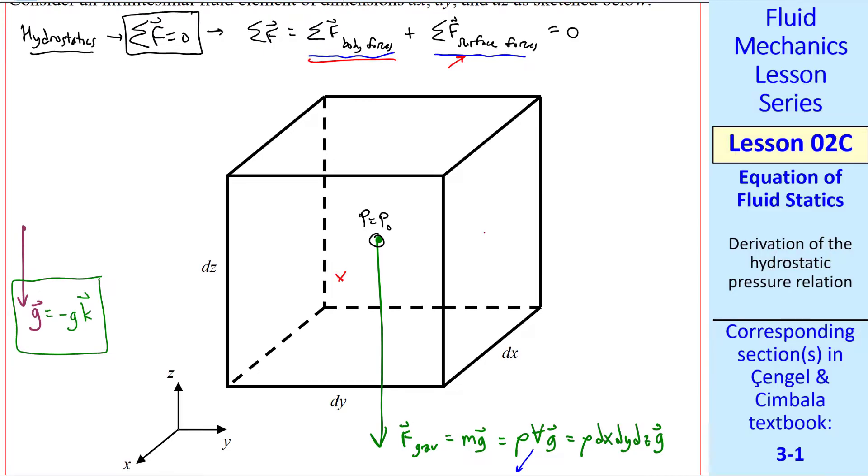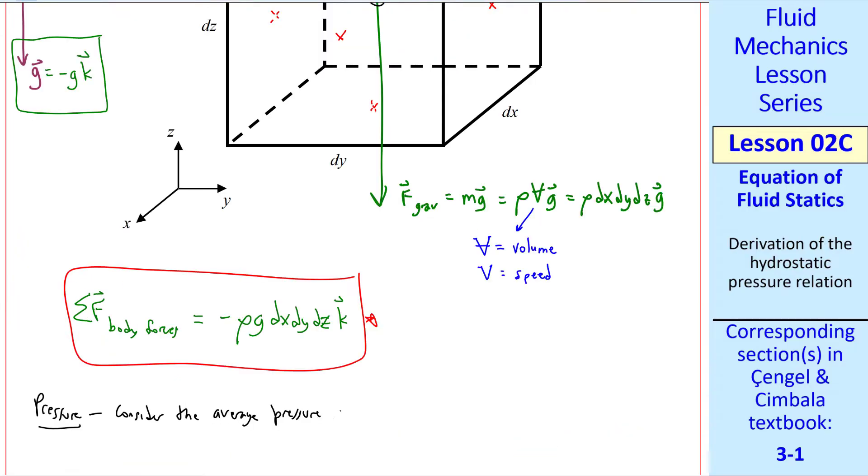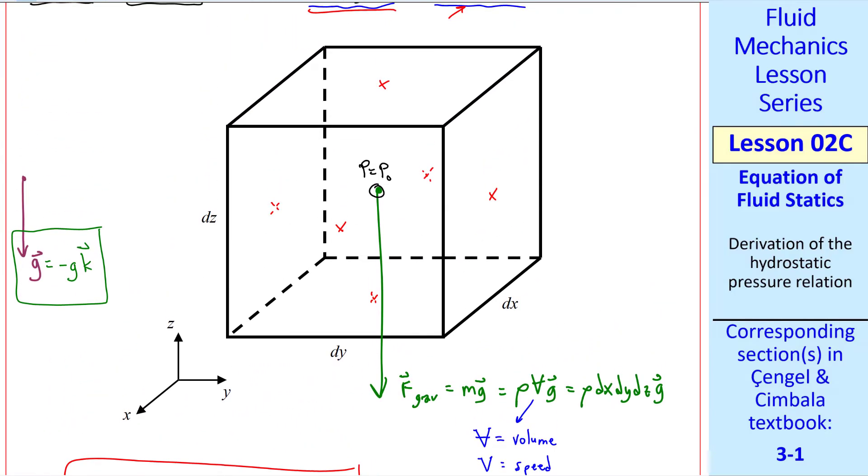This is hard to draw in 3D, but let's look at the center of each of these faces. Here's the center of the front face, the right face, and the top face. I'll use dashed lines for the left face since it's hidden, the back face, and the bottom face. For the pressure forces, let's consider the average pressure on each of the six faces. Since this element goes to zero, we're really talking about pressure at a point. But we need to have a finite fluid element in order to have some change across the faces.